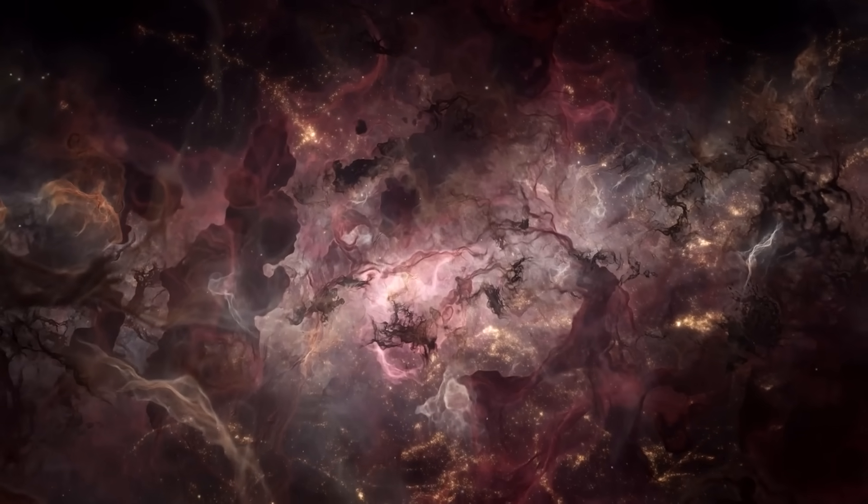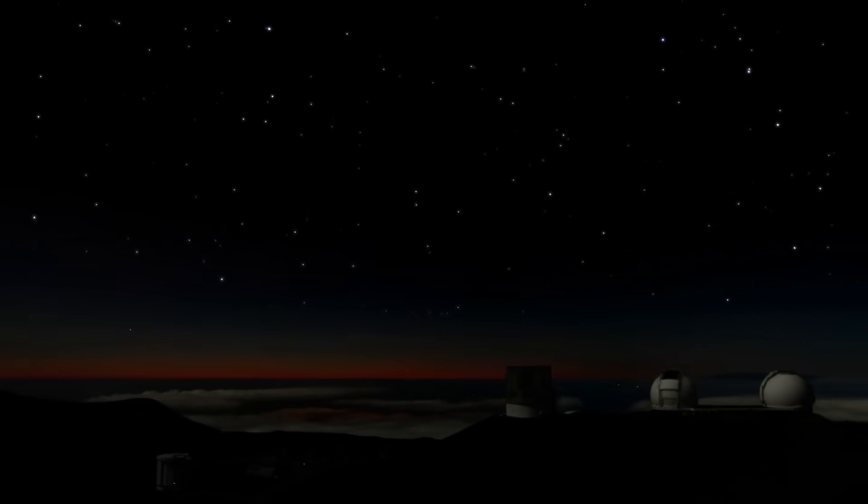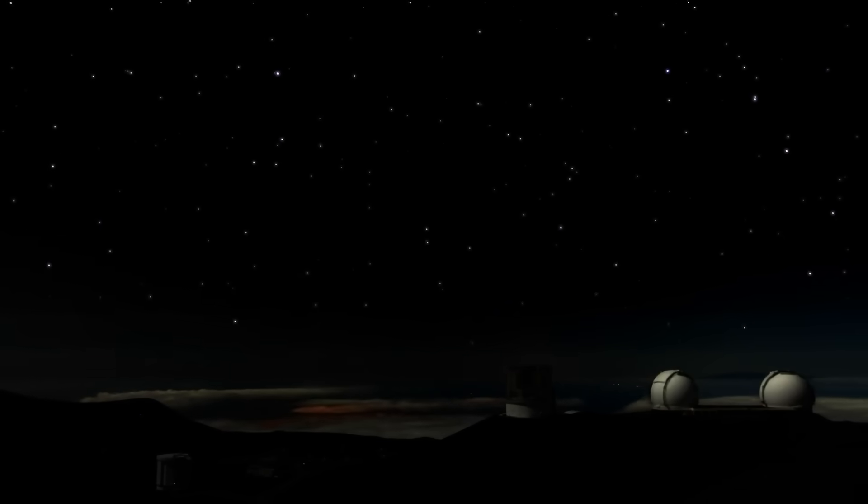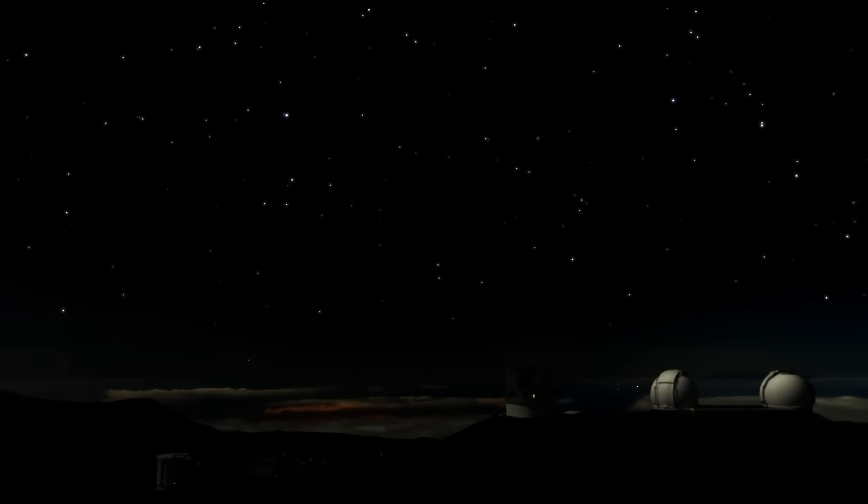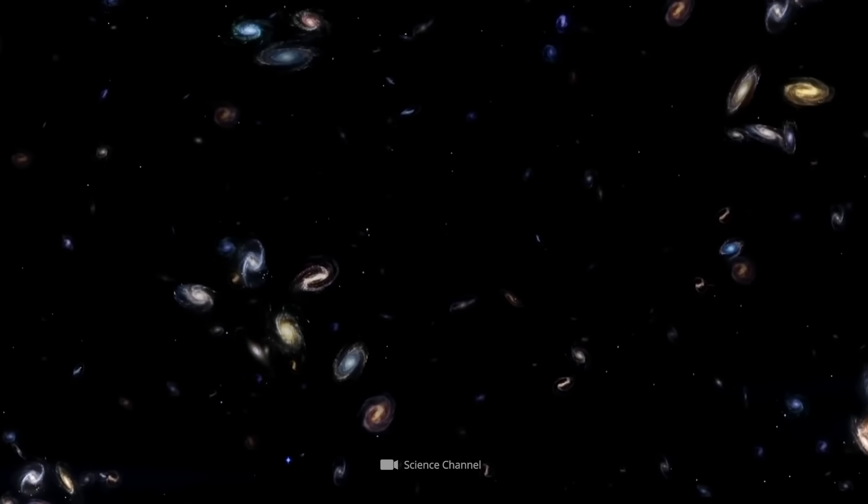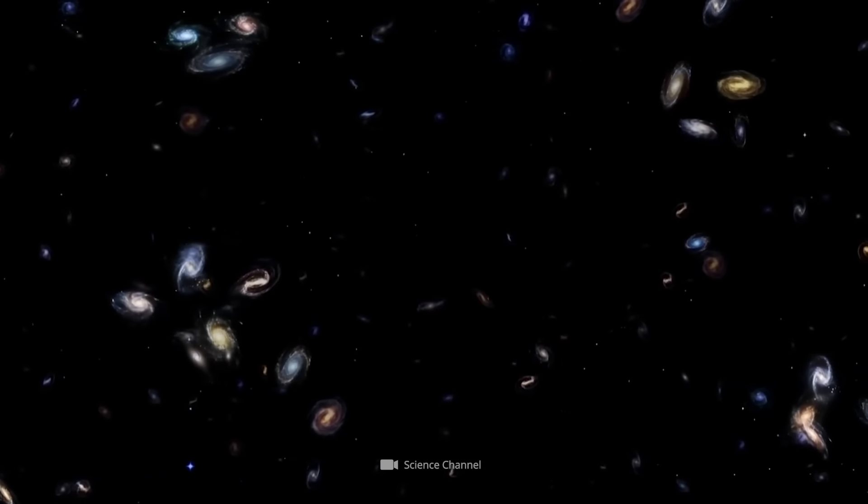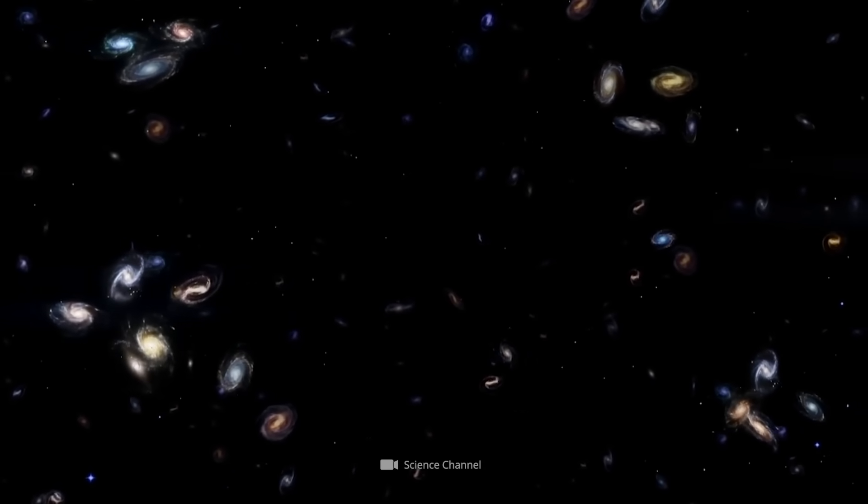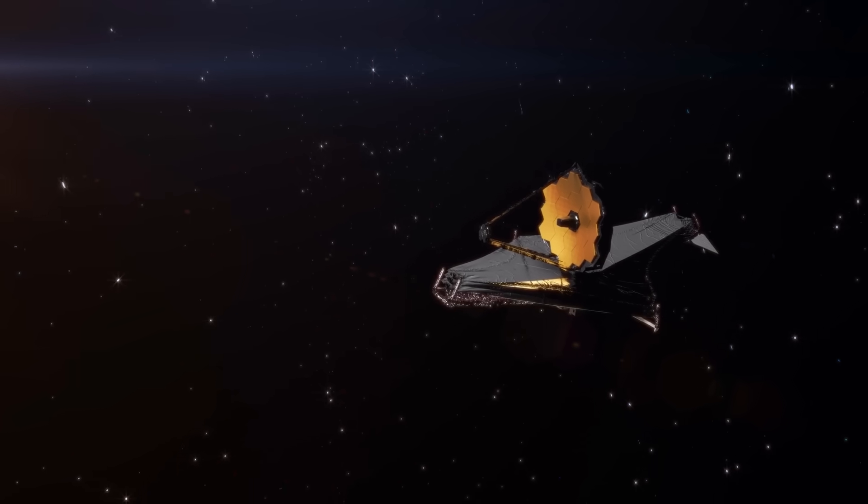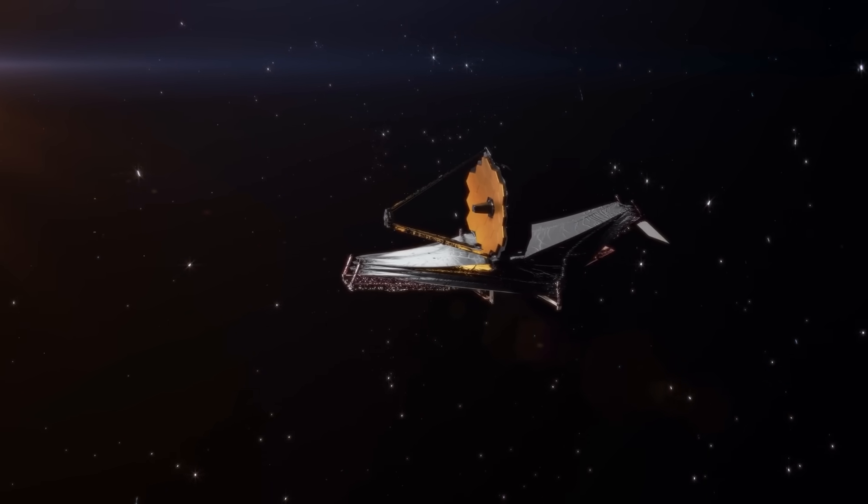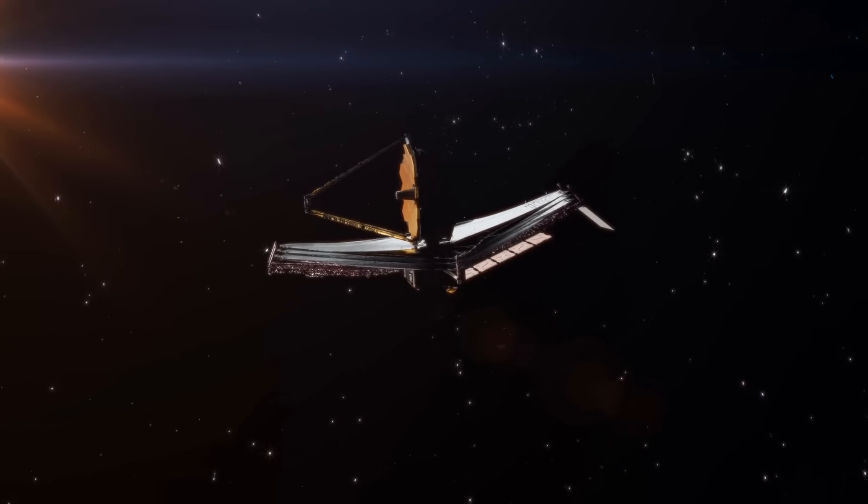Nevertheless, Einstein was always sure about another interesting question. Even if the universe did have a beginning and an end, he was certain that we would never be able to see this beginning and end, no matter how good our telescopes are. How did Einstein come up with this crazy idea? And what does it have to do with the void discovered by the James Webb telescope?